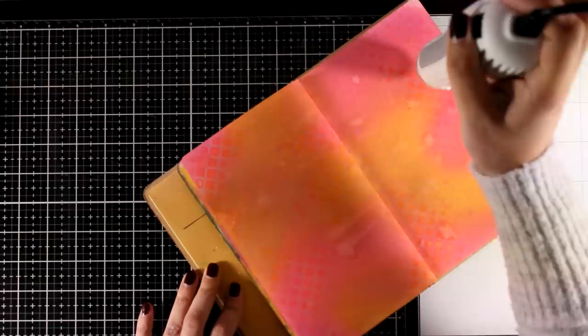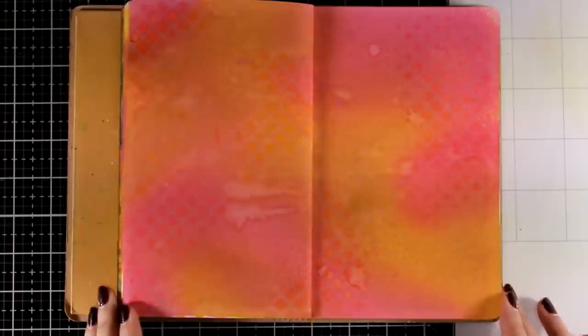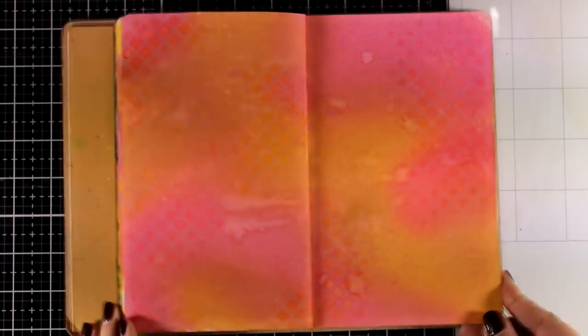Now the heat gun that I'm using is by WOW and it has two settings. One is for embossing and the other one is for drying which makes it a great tool to have. Here is a close-up look on how my pages look at the moment and just to add some more visual texture at the background I'm going to do some stamping.